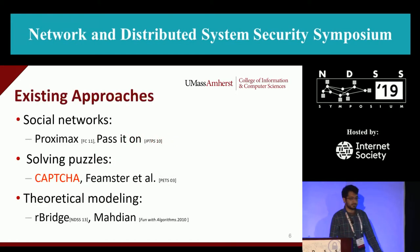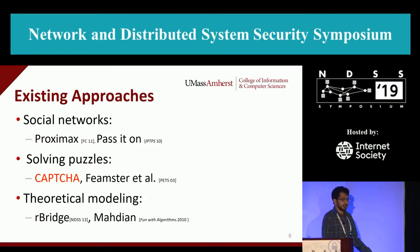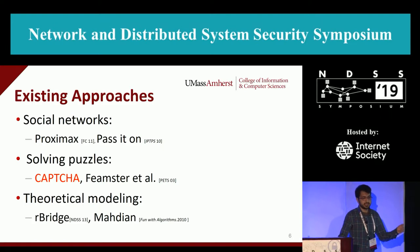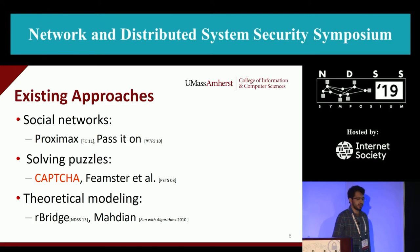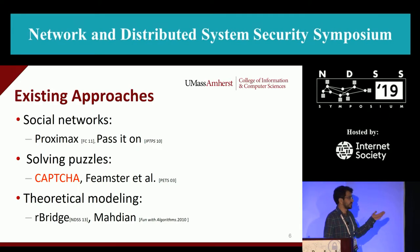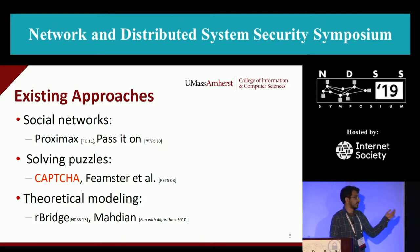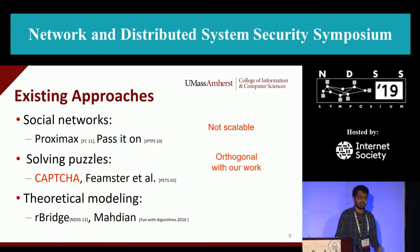We are not the first group to work on this problem, as it is a very common one. There are three main ideas around it. One is using social networks — for example, you give proxies to your friends and they share further, assuming your friends are not censoring agents. Another is using crypto puzzles or normal puzzles; Tor currently uses CAPTCHA. And similar to our work, there are ways to theoretically model the problem and find the best solution, though some of these works are not scalable, and we can combine many of them for a better solution.